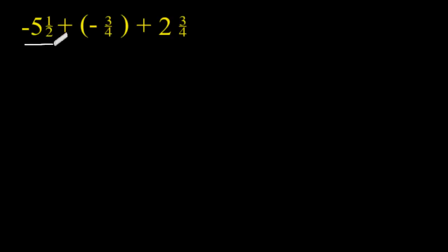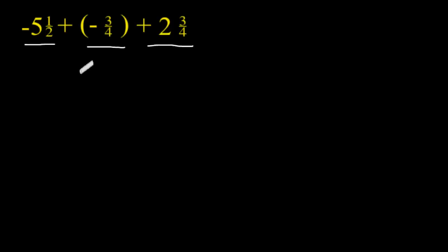The first term is a negative term, the second term is also a negative term, and the third term is a positive term. Remember, we can add values together that share the same sign. So we are going to start by finding the sum of negative 5 and 1 half and negative 3 quarters.